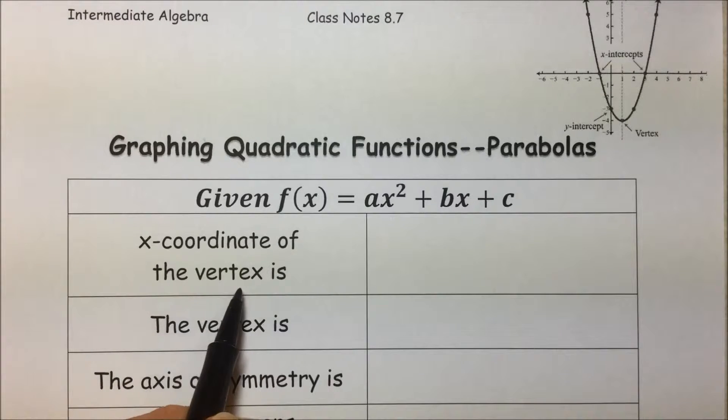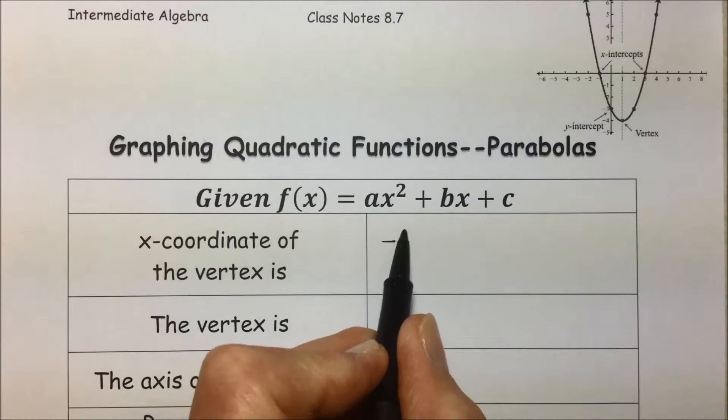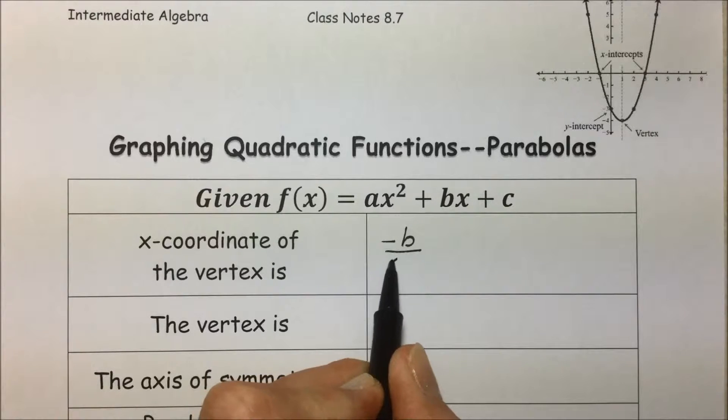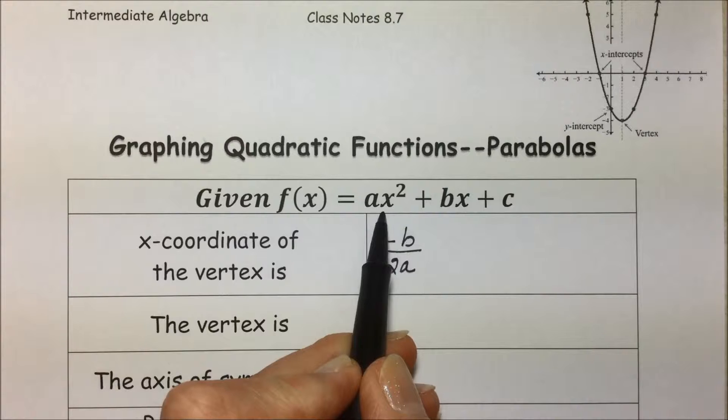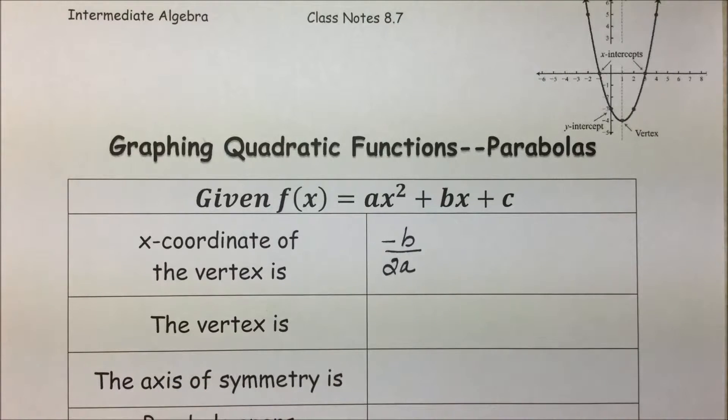The x-coordinate of the vertex ends up being -b/2a, taking those coefficients from the squared and the linear term.